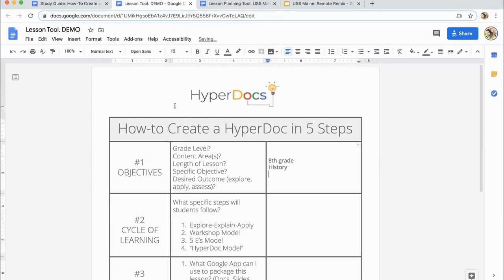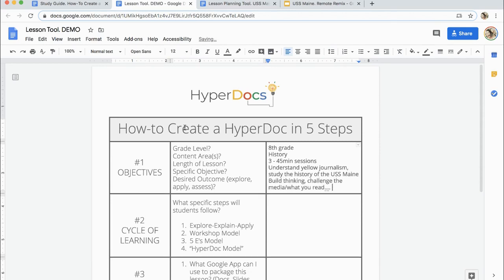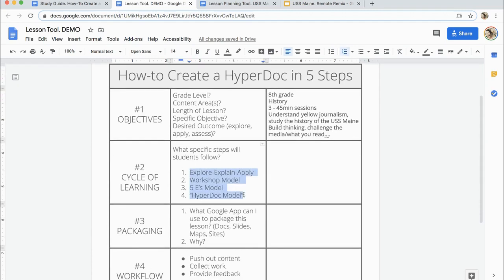Start with step one. Just go box by box and think about the decisions that are prompted. What are your grade level needs? Current content area. What are the specific outcomes you have? Just jot some of those ideas in box one.